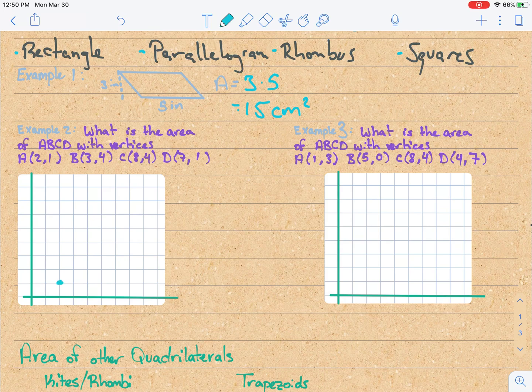We should be able to apply this to the coordinate plane as well. So here we're given the vertices. Our first step should be plot each of the corners. A is at (2,1), B is at (3,4), C is at (8,4), and D is at (7,1).